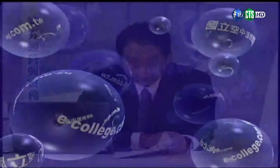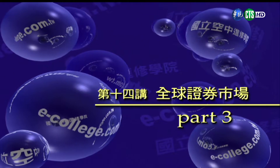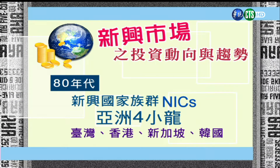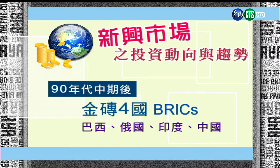那我们接下来进入新兴市场的投资动向跟趋势。新兴市场什么叫新兴市场？这是一个美国人的观念去做定义的解释。全球的经济从80年代，我们第一次看到新兴国家族群，简称叫NIX，代表亚洲四小龙：台湾、香港、新加坡、韩国，二十几年前这就变成新兴国家的焦点。到了90年代另外一个新兴的名字叫BRIC，金砖四国，就是Brazil、Russia、India跟China，巴西、俄国、印度跟中国的崛起，那个时代在吹金砖四国的风潮。